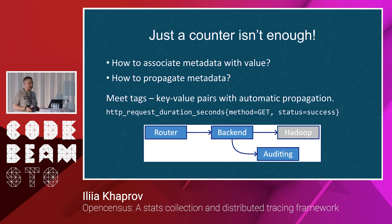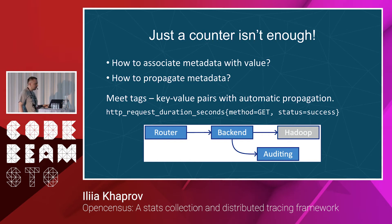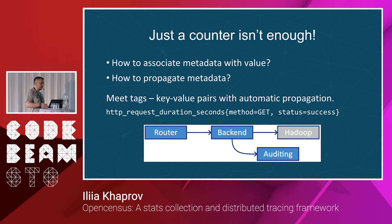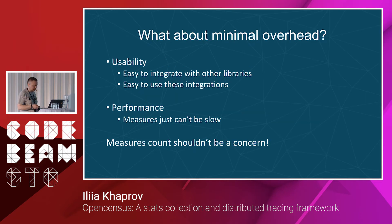OpenCensus introduces a new thing: tags propagation. Here on the image we see a router — the first thing that meets a user's request. It can create its own set of tags which will be transferred to a backend controlled by you, or forwarded to an auditing system, and to Hadoop — which is great because it's a third-party product that can be integrated with OpenCensus and will understand your tags too.